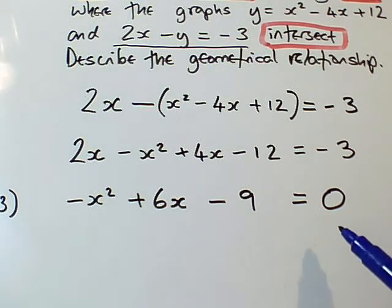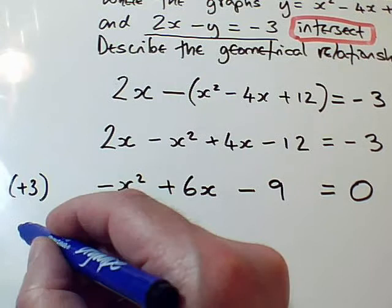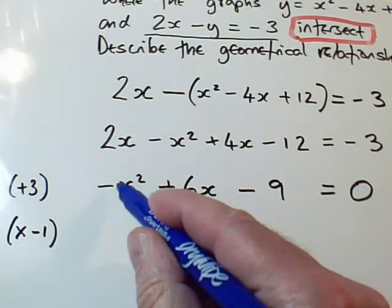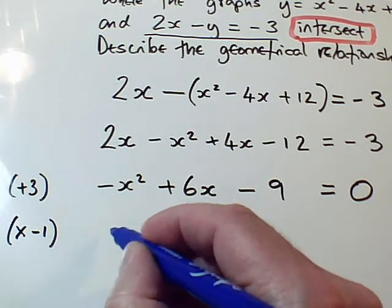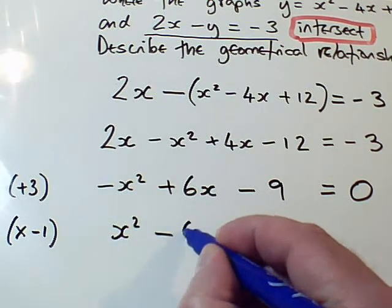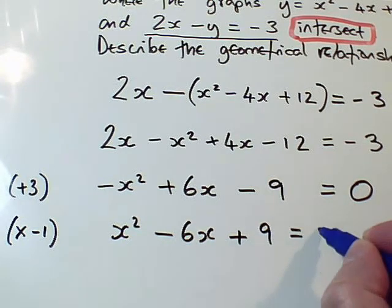This is a perfectly good quadratic equation, but it will look better if I multiply both sides by -1. So -x² times -1 is x², +6x becomes -6x, and -9 becomes +9 equals 0. So I've got a quadratic equation which I can solve in the normal way.